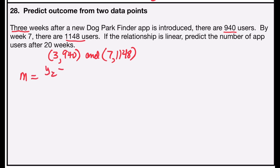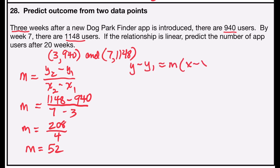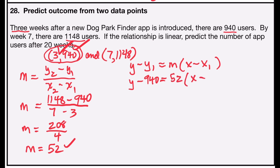Following the same process, I'll find the slope first. Slope = (1148 − 940) / (7 − 3) = 208 / 4 = 52. Now I'll use point-slope form: y − y₁ = m(x − x₁). I'll choose the point (3, 940), giving y − 940 = 52(x − 3).